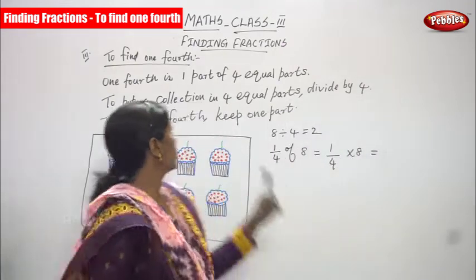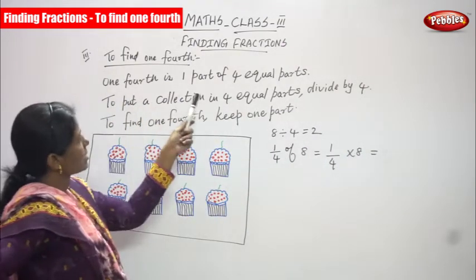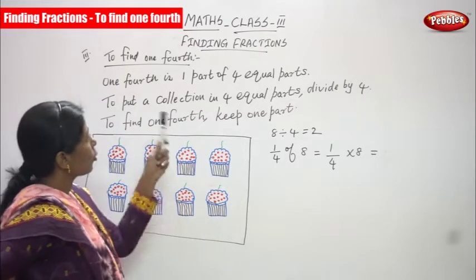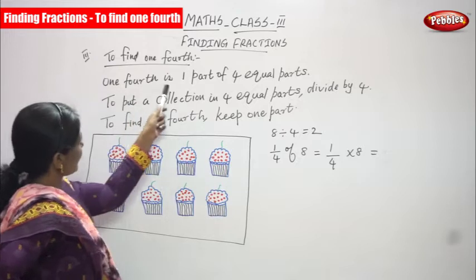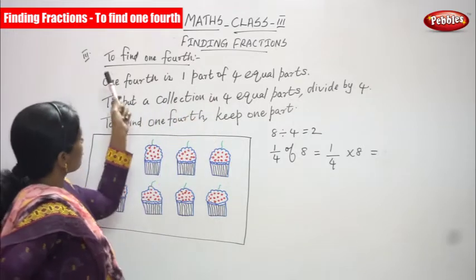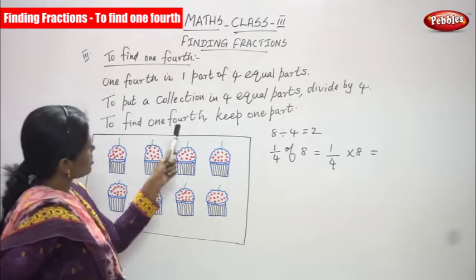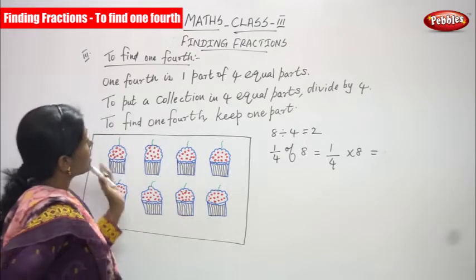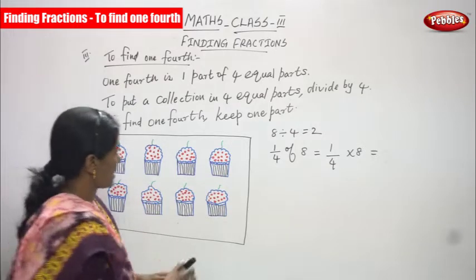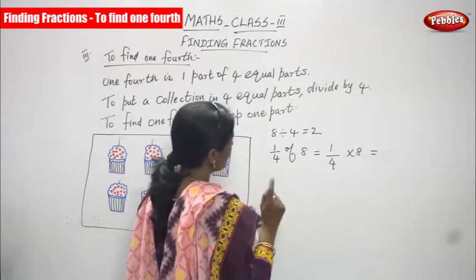Now we are going to find one fourth. One fourth is one part of four equal parts. To find one fourth, we put a collection into four equal parts — that means dividing by four. To find one fourth, we keep one part.